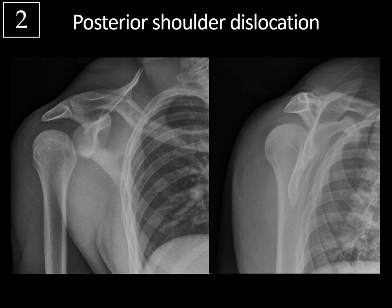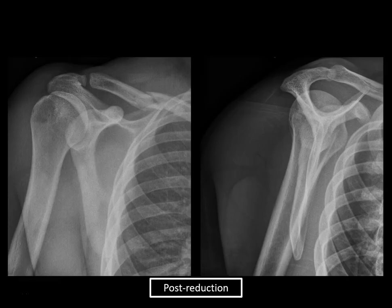If the humeral head is impacted against the glenoid, you might get a trough line sign — a dense vertical line in the medial humeral head due to impaction — but we don't have that in this case. You might also have the rim sign where the glenohumeral joint is widened to greater than 6 millimeters, and possible disruption of the scapulohumeral arch. On the post-reduction images, you can see a normal half-moon overlap sign with the glenoid and humeral head overlapping nicely, no glenohumeral widening, and no lightbulb appearance — a normally reduced right shoulder.